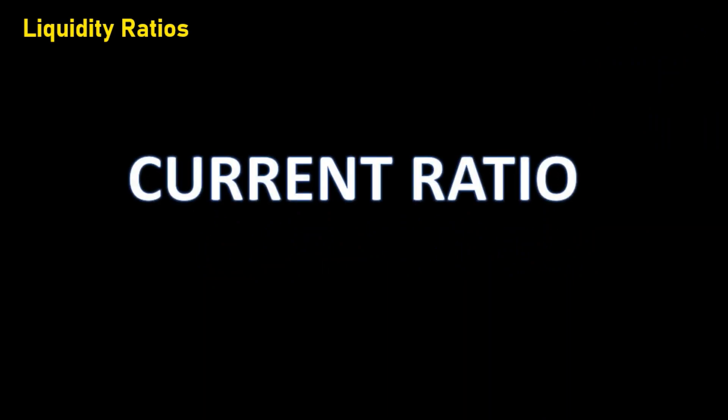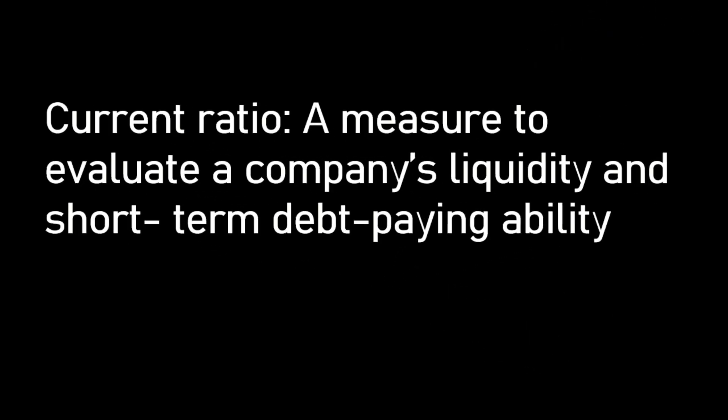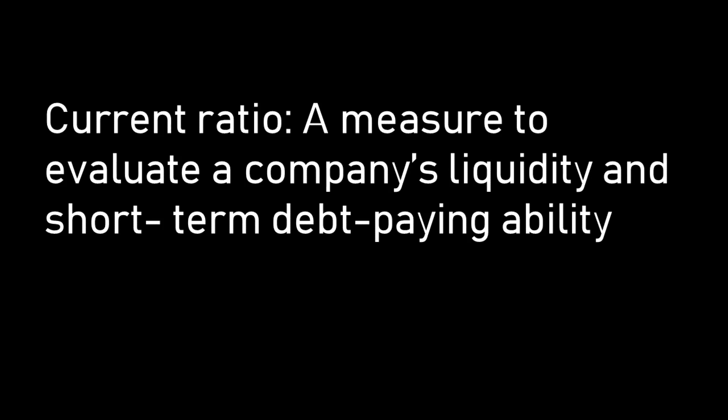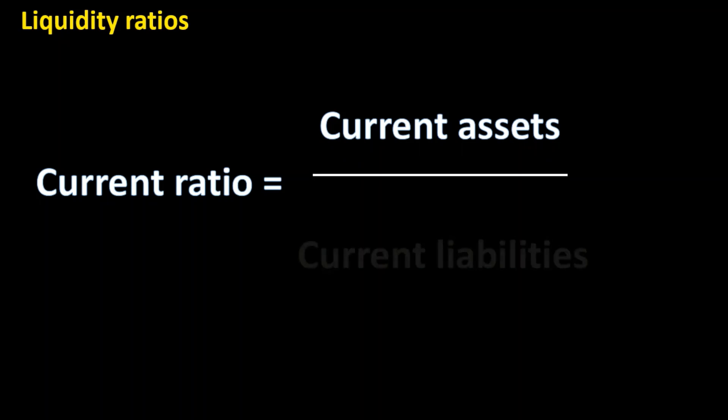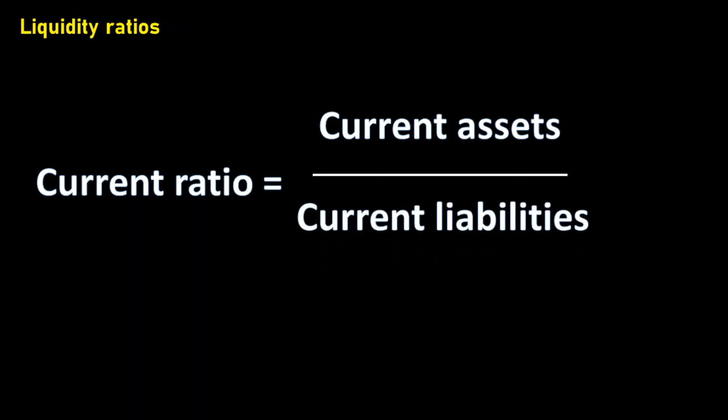What is Current Ratio? Current Ratio is one of the liquidity ratios that is widely used to evaluate a company's liquidity and short-term debt-paying ability. It is computed by dividing current assets by current liabilities. So the formula for Current Ratio is Current Assets divided by Current Liabilities.